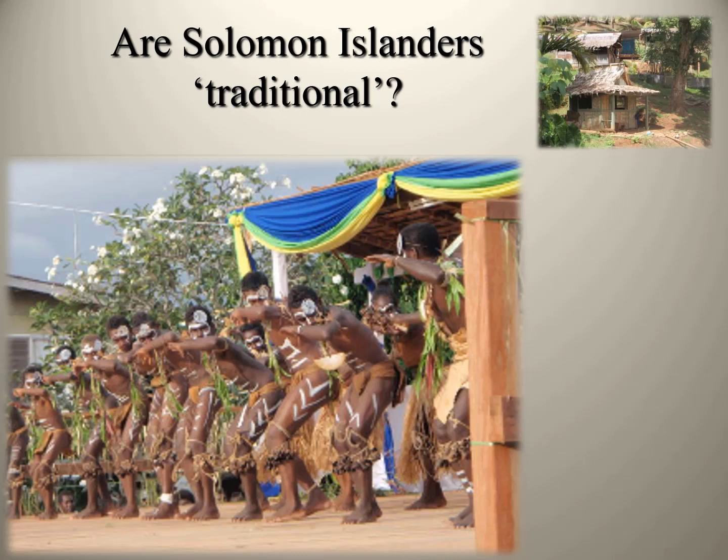These are pictures from my fieldwork in Solomon Islands. On the top right, that's a traditional Solomon Island hut made of local materials - wood, thatch, and grass roofing. In the middle is Solomon Islanders doing a traditional custom dance, dressed in traditional garb and war paint. The blue, green, and yellow drapery is the Solomon Island flag colors - traditional or modern? Nation states are a fairly recent invention. Prior to the Solomon Island nation state, there were hundreds of distinct ethnic, cultural, and linguistic groups. Solomon Islands today has half a million people and over 80 indigenous languages.